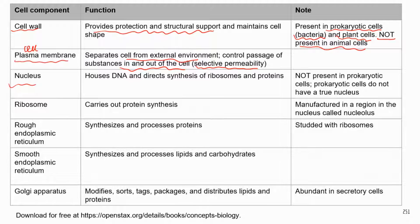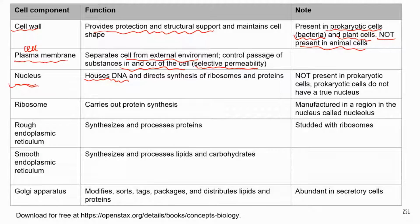The third structure is probably one of the most important structures in the cell — it's the nucleus. The nucleus houses DNA, which is the blueprint, so the nucleus is very critical. You can think of the nucleus as the command center, because the DNA determines pretty much everything in the cell.